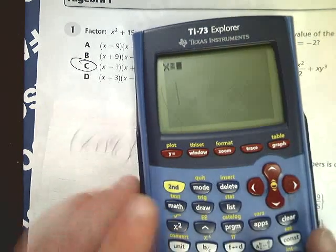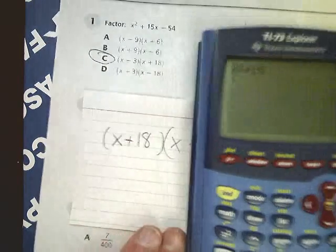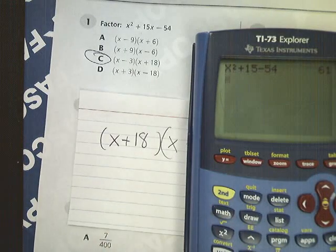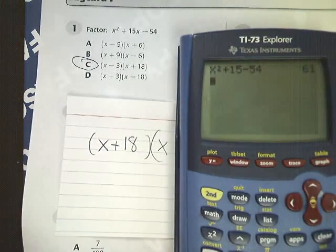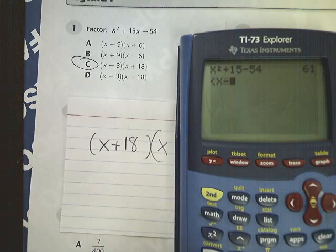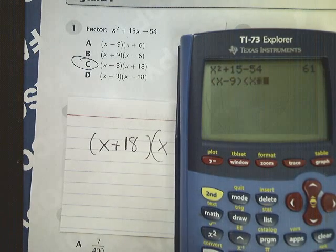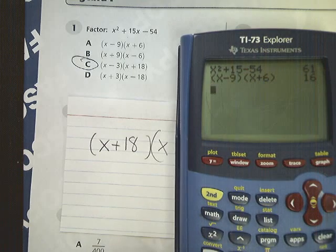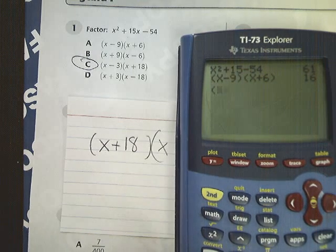And then I can type in x squared plus 15x minus 54, and I'd get 61 or whatever you happen to get. The number is irrelevant. I'm going to try the answer choices. That one doesn't work, so I'll go straight to the one that I know works.